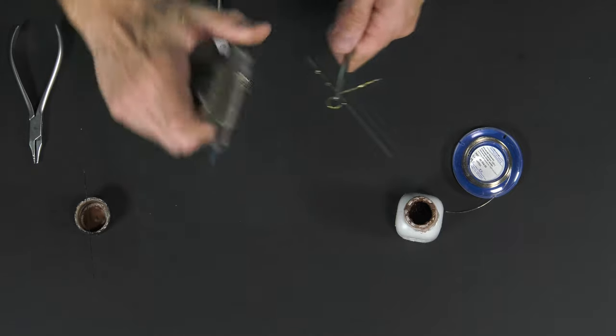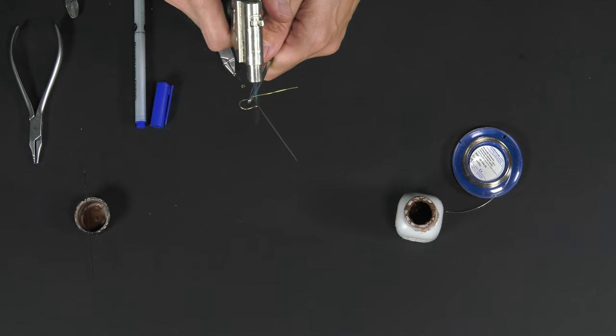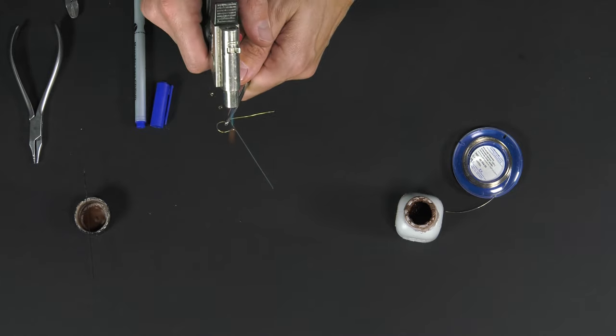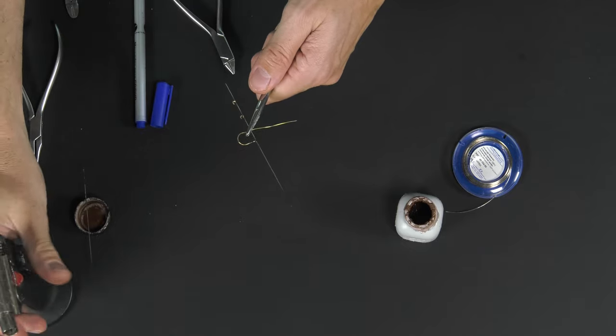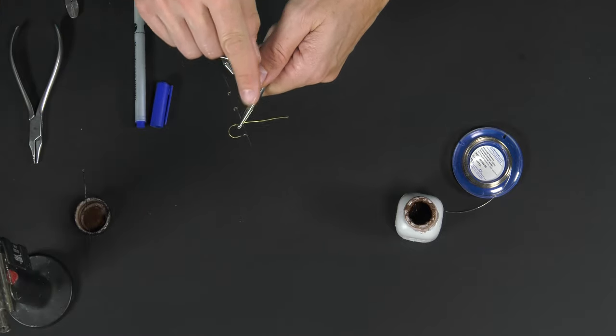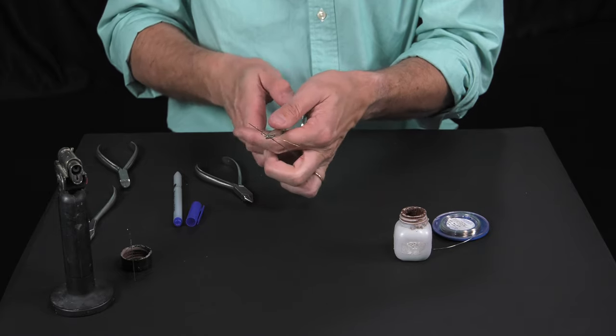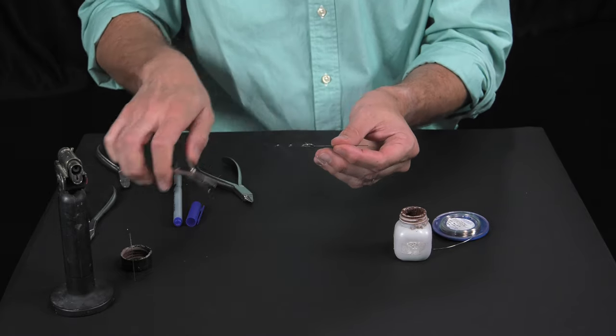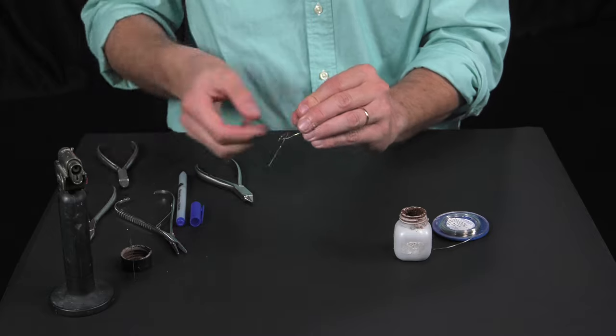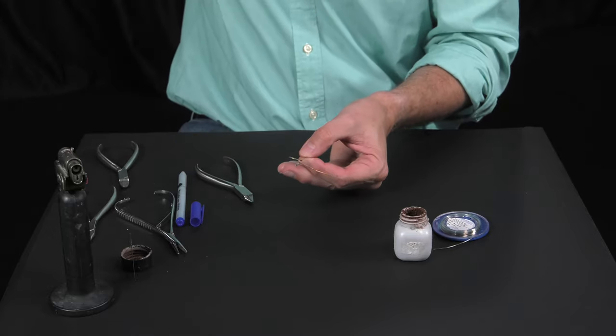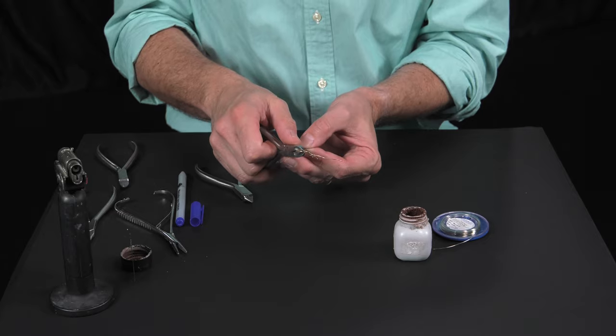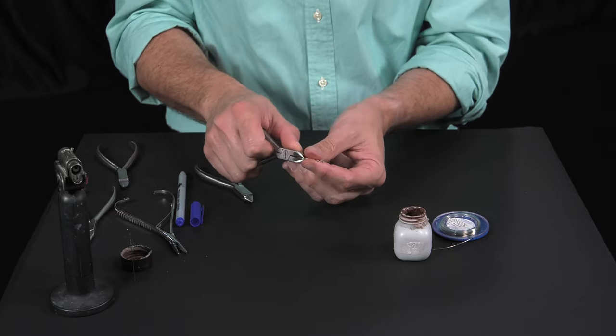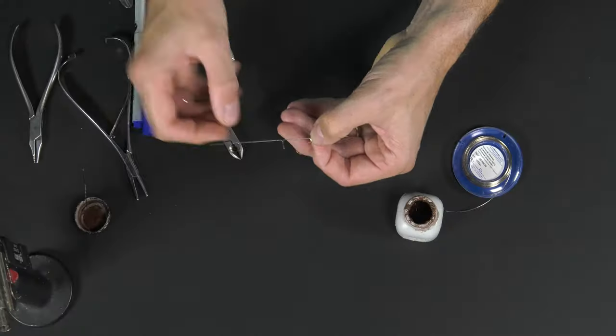We heat the brass wire to allow the silver solder to melt and flow toward the wire at the desired point. Now we remove the brass wire, we can calmly trim the brass wire to the length we want and shape the hook just as we did in the previous method.